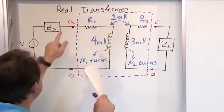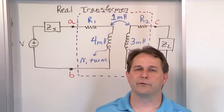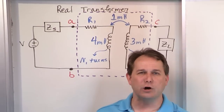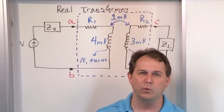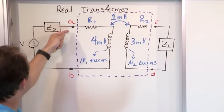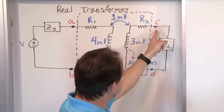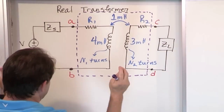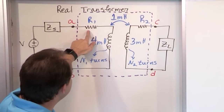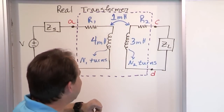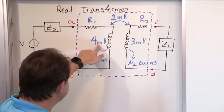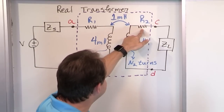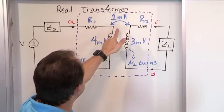Everything inside of this dotted line is what we call the transformer. When you buy a transformer from a circuit supply warehouse, you're going to get a bunch of coils, generally wrapped and often coated in plastic. On one side there'll be two leads coming out — we call that A and B — and on the other side two more leads, C and D. The primary winding is the left-hand winding; the secondary winding is the right-hand one. The primary winding has an inductance of 4 millihenries and a very small resistance component — usually a few milli-ohms. The secondary winding has a self-inductance of 3 millihenries with a very small resistance, and there's a mutual inductance between the coils of 1 milli-henry.